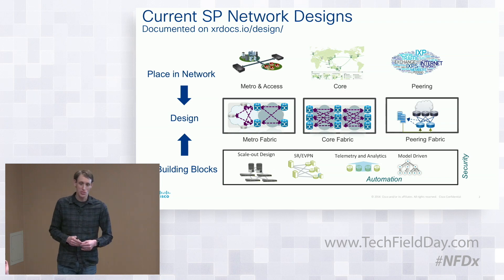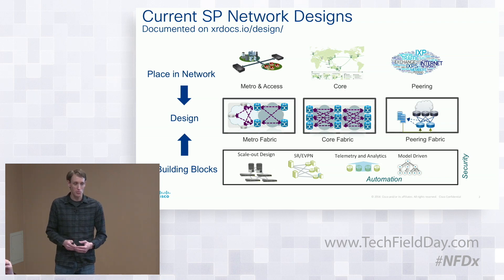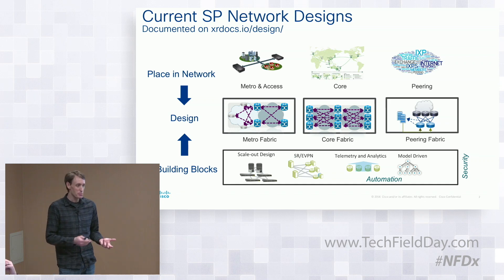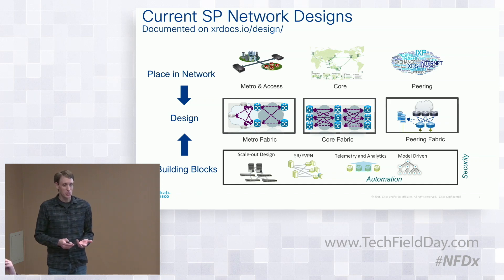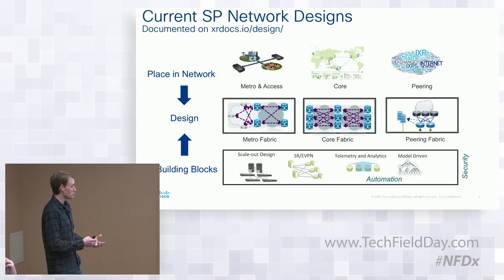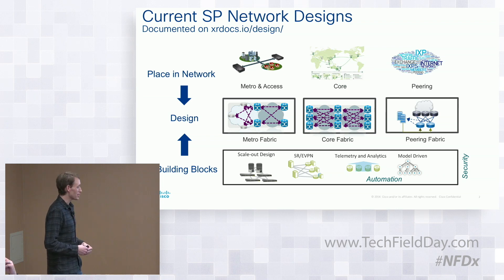Jose talked a lot about segment routing. Segment routing is really the basis for a lot of the things we're doing today, mainly on the transport side but also on the service side, and then EVPN. EVPN is a technology that probably should have existed 10 years ago. We went through the evolution of EPLS and things like that, which weren't great. Now we're at EVPN, and that's really the modern way that we're looking at delivering layer two services.